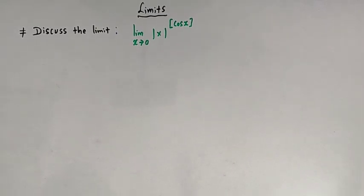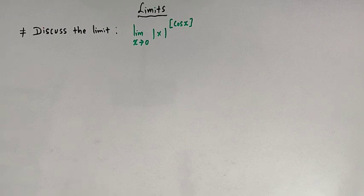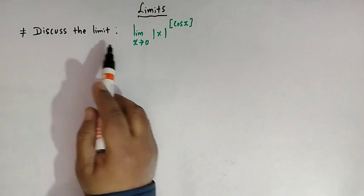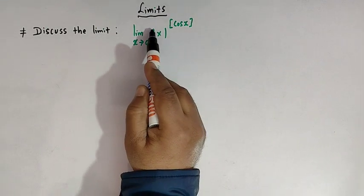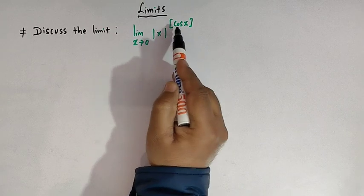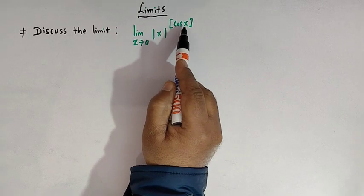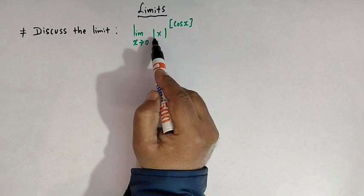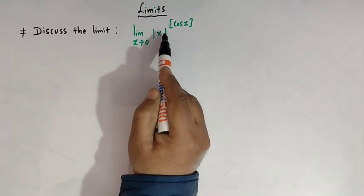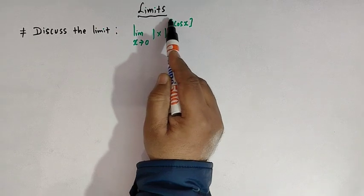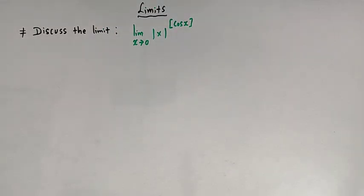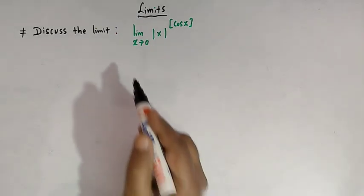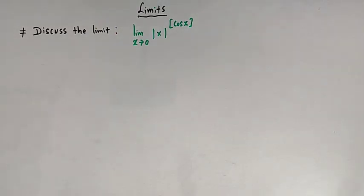Hello viewers. In today's class we are going to discuss one important conceptual limit. We have to discuss the limit: x tends to zero of mod of x raised to the greatest integer of cosine x. This limit involves the mod function and the greatest integer function. Let us discuss this limit and see whether it exists or not.